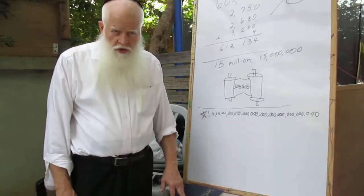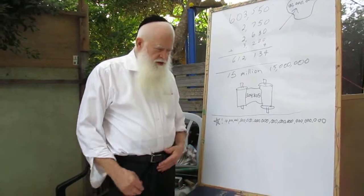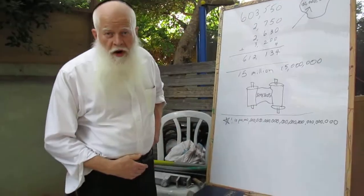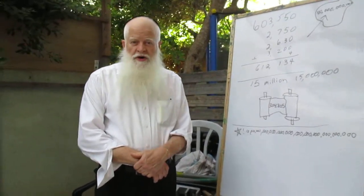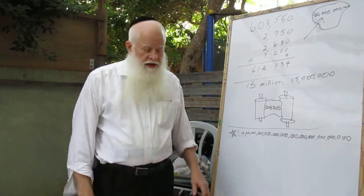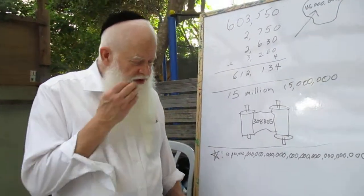This week's Parsha for you, I believe, is Naso. For us, it's Vaheloska. And we are in Sefer Bamidbar. In English, it's called Sefer Numbers, the Book of Numbers, because it starts with the counting of the Jewish people. And then in this week's Parsha, it has the counting of the sons of Levi.